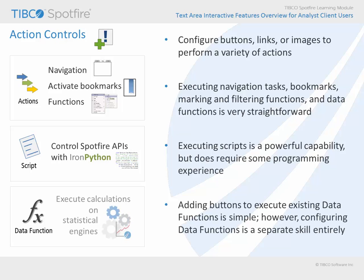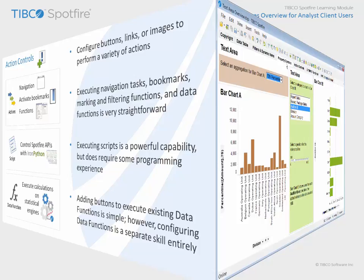Finally, though configuring a button to execute a data function on a statistical engine is really simple, the process of configuring a data function is beyond the scope of this learning module. Let's return to the demonstration example where we can examine a couple of action control buttons, links, or images which have been configured within text areas.